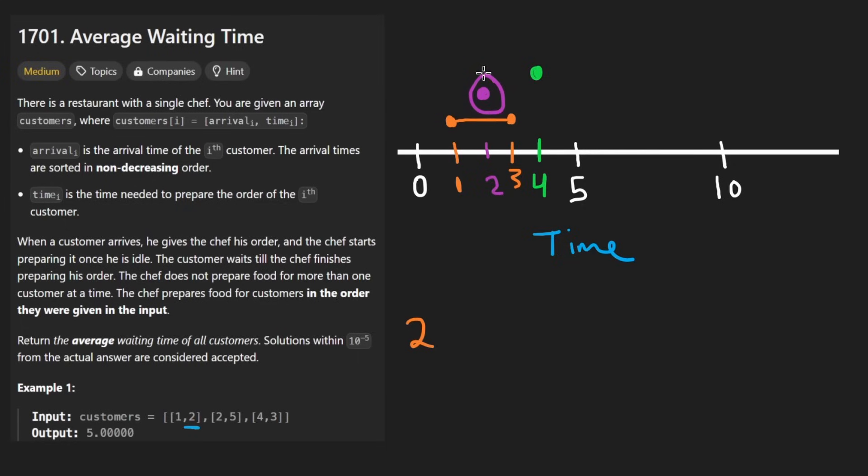What about this purple person? They arrived at time two and their order takes five time units to prepare. So could we just say something like this? Okay. At time two. And then, you know, maybe at time seven, their order is finished. Nope. These are overlapping. So what do we do?